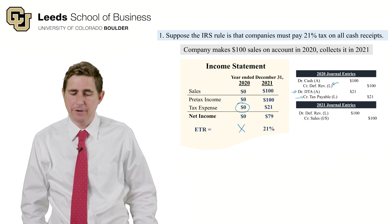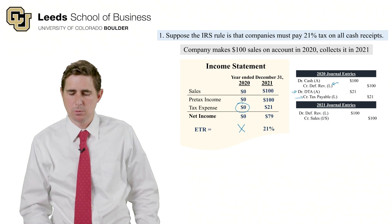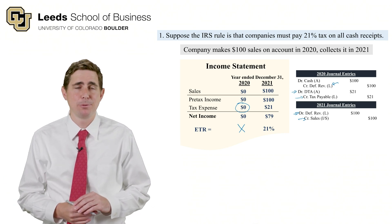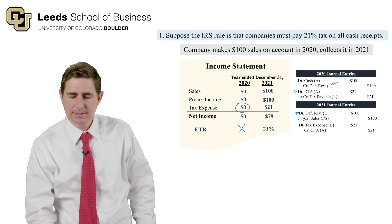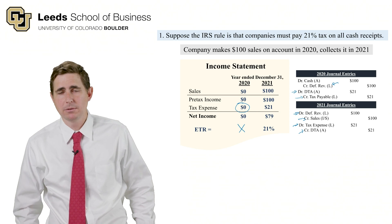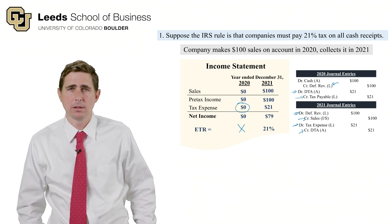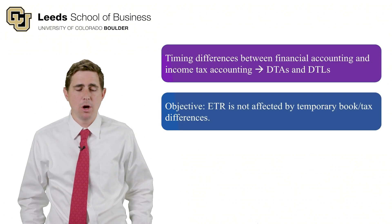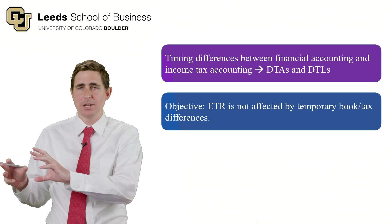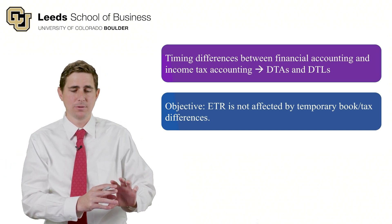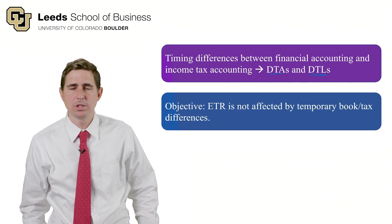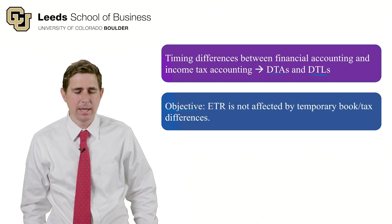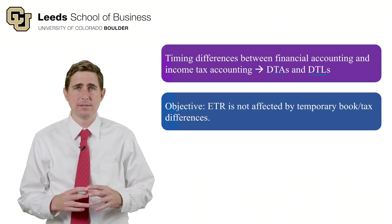In 2021, the customer redeems the gift card: we credit Sales and debit Deferred Revenue to recognize the sale. Now we get to use the deferred tax asset — we debit Tax Expense and credit the Deferred Tax Asset for $21, since we already paid last year and don't pay again. In summary, timing differences between financial accounting and IRS tax accounting give rise to deferred tax assets and liabilities, with the objective that the ETR is not distorted by these temporary book-tax differences.